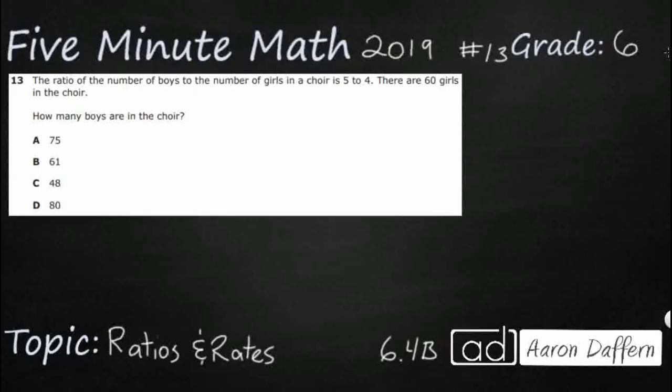The ratio of the number of boys to girls is 5 to 4. We can set up our ratio a few different ways. We can say 5 to 4, we can say 5 colon 4, or we can say 5 over 4 as a fraction. All three of these work for ratios here. There are 60 girls in the choir. How many boys are in the choir?